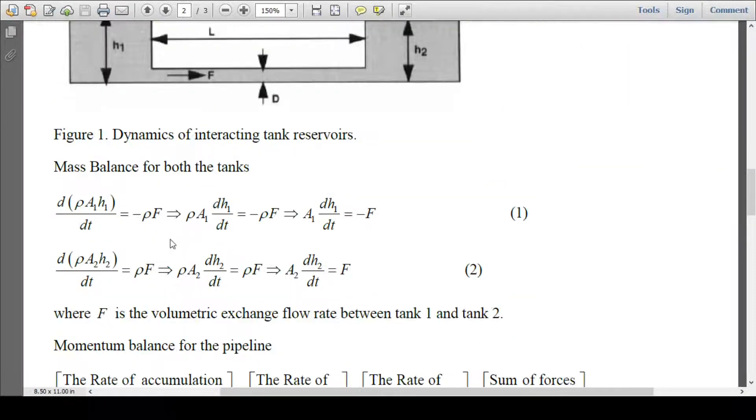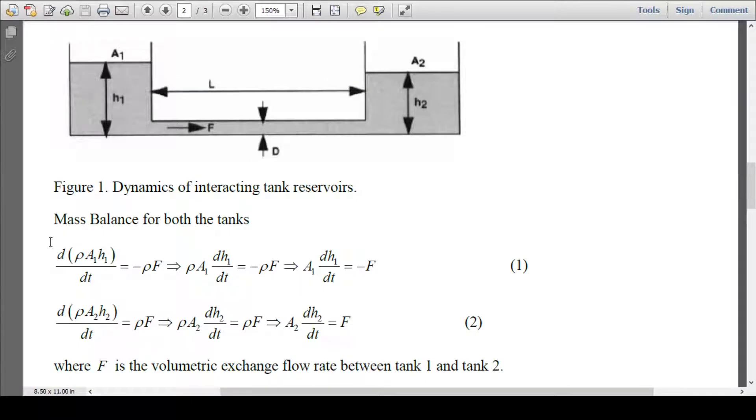In this particular case, if you see the mass balance in both tanks, this is the rate of mass change within the tank. d(rho A1 H1)/dt equals minus rho f. This much volume is going out from here. Since density is constant, area of cross-section is constant, so A1 dH1/dt equals minus f.